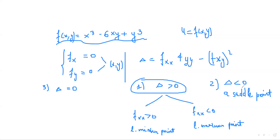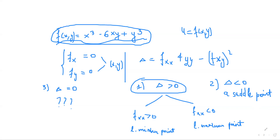If delta is less than zero, the point is called a saddle point. And if delta equals zero, this method is inconclusive — we cannot determine anything about local extreme values with this method. We would need to do extra research, such as completing the square or using graphical methods. Different methods can be applied, but not this particular one. Let's now apply this explanation to a specific example.